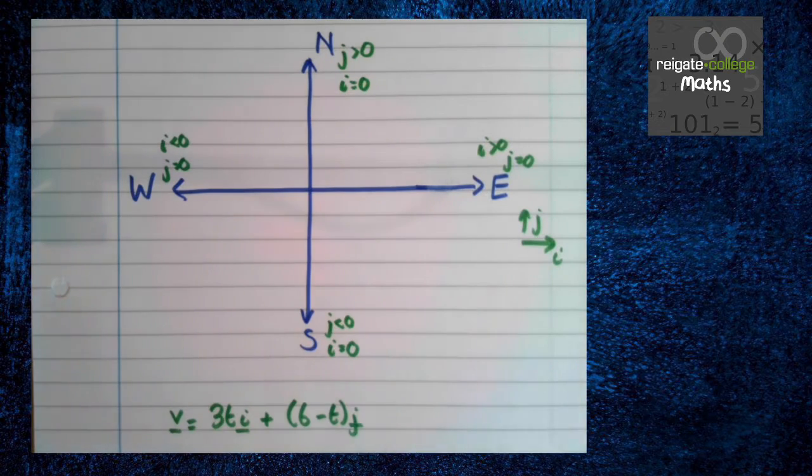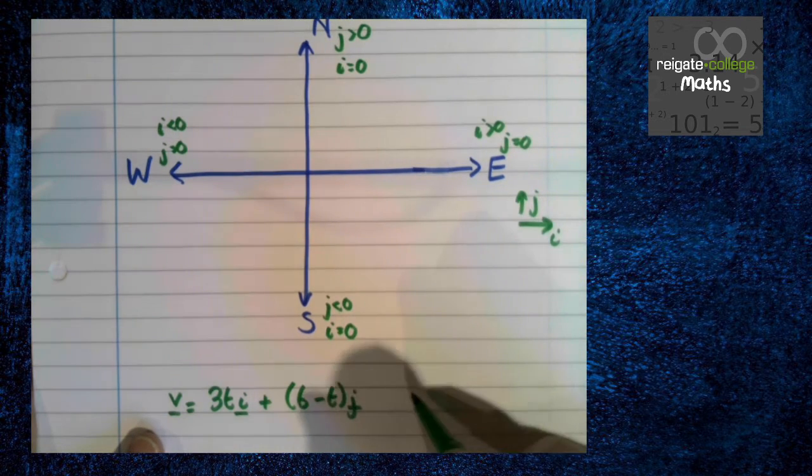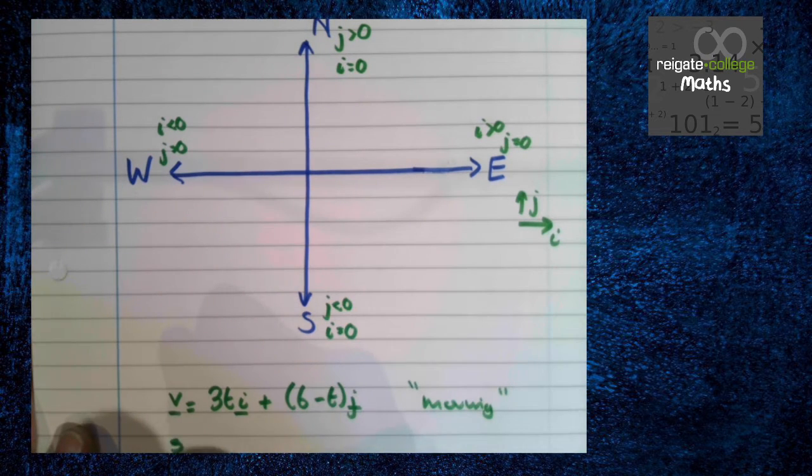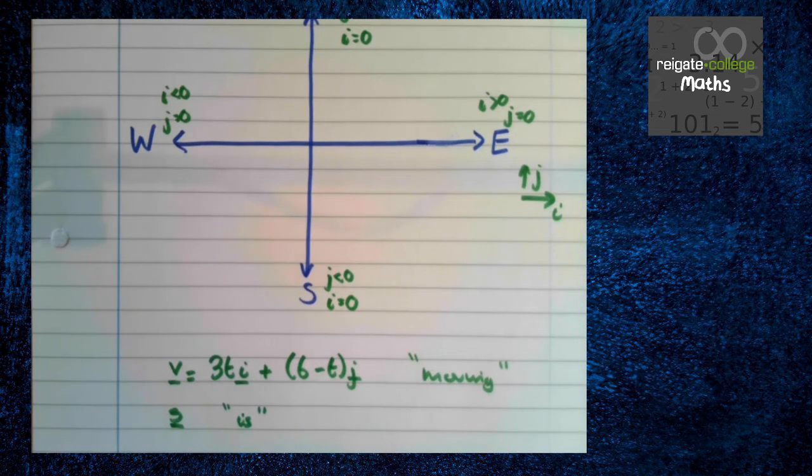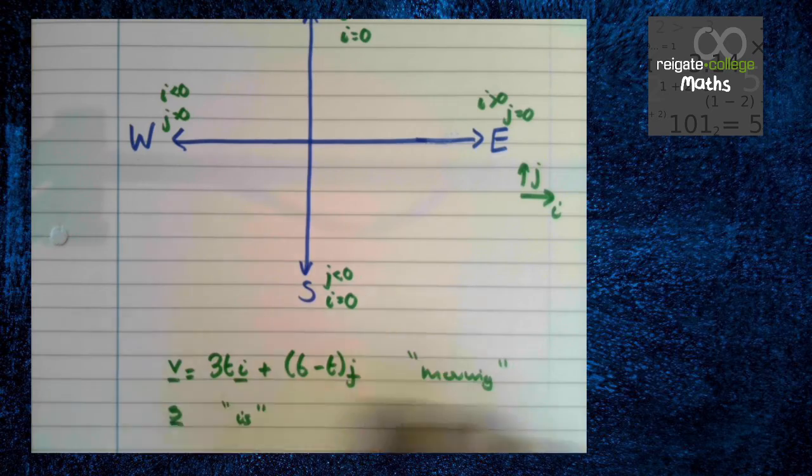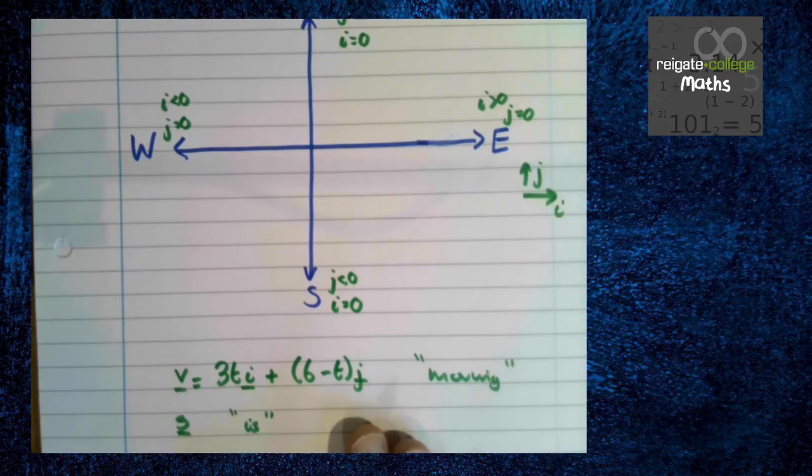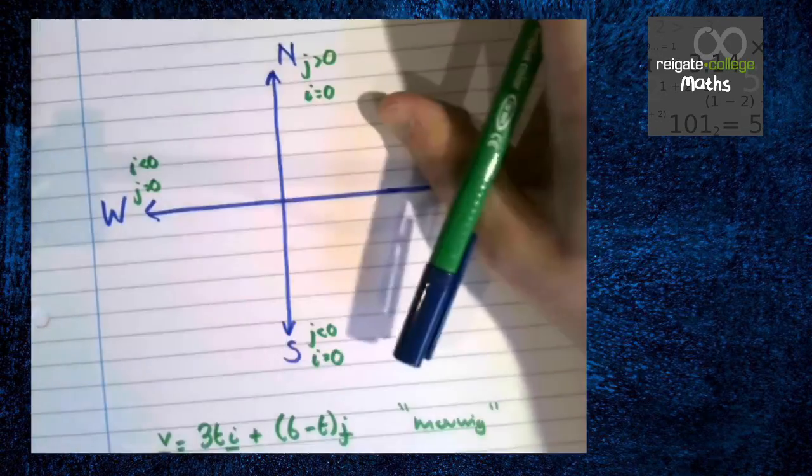So that's really kind of what this is about. The key thing as well is deciding whether it's moving in that direction or it is that direction relative to a point. Velocity is when it is moving in a direction. Displacement is when it is. So if something is due north, its displacement has this property. If it's moving due north, its velocity has this property.